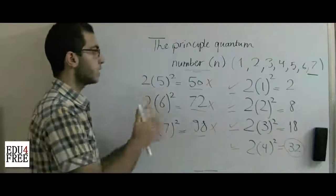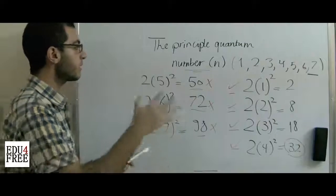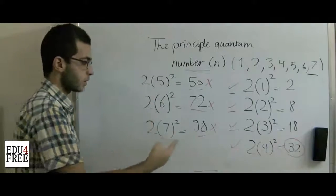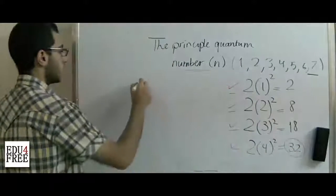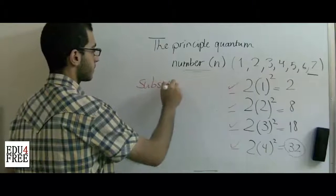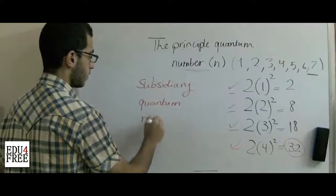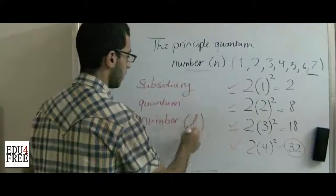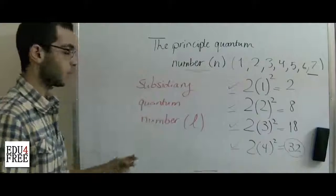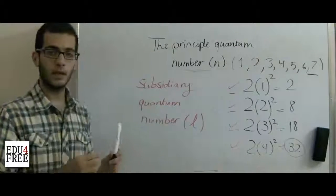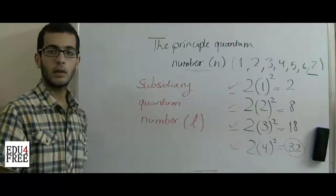So the principal quantum number describes the number of energy levels. Now, within each energy level there are some secondary orbitals. These secondary orbitals are expressed by the second quantum number, which is called the subsidiary quantum number, referred to by a small l. It is called 'subsidiary' because it expresses the number of secondary orbitals in each energy level. We will talk about this in the next session. Thank you for watching!